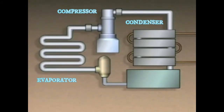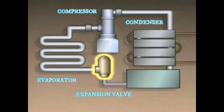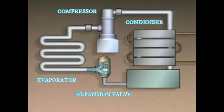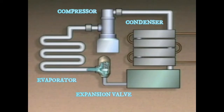The expansion valve controls the expansion of the refrigerant and its flow to the evaporator. As the refrigerant passes through the expansion valve, it expands rapidly. This causes the pressure of the refrigerant to drop, and the drop in pressure also causes the refrigerant's temperature to drop, so the fluid flowing into the evaporator is a low-pressure, low-temperature liquid.